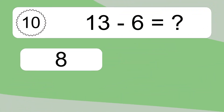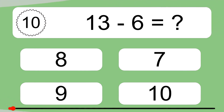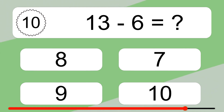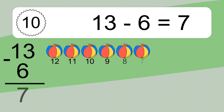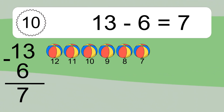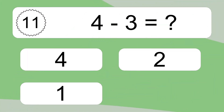13 minus 6 equals what? 13 minus 6 equals 7. Let's count it: 12, 11, 10, 9, 8, 7.